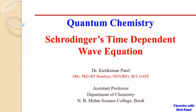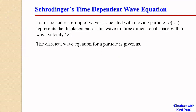We will now look at the Schrödinger time-dependent wave equation. For this, let us consider a group of waves associated with a moving particle. Waves associated with a particle are always de Broglie waves. So, let us consider a group of waves associated with a moving particle.